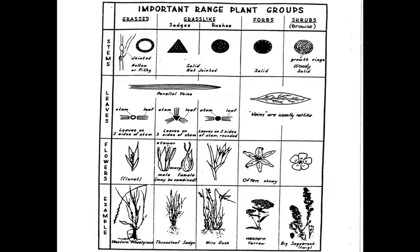And finally, the shrubs have woody centers — in other words, annular rings. They also have net venation in the leaves, and oftentimes have showy flowers. An example of that would be big sagebrush.